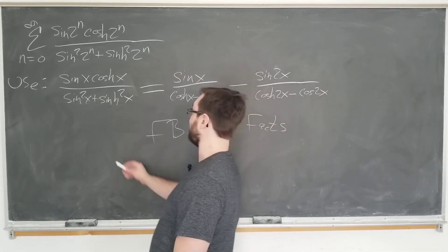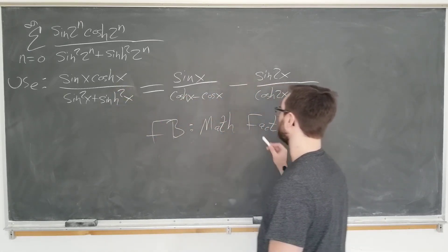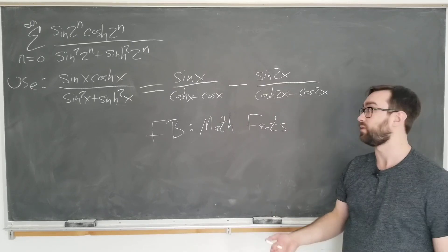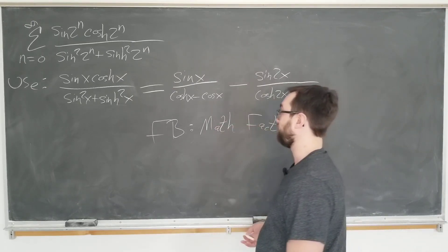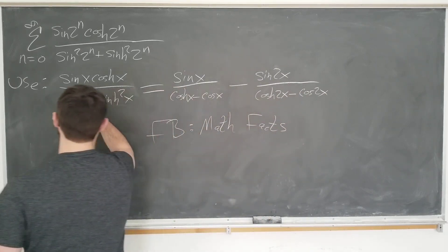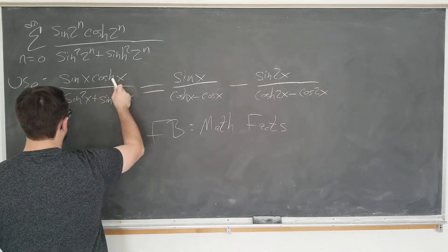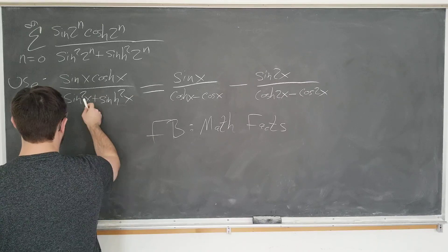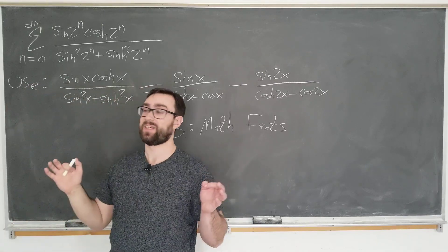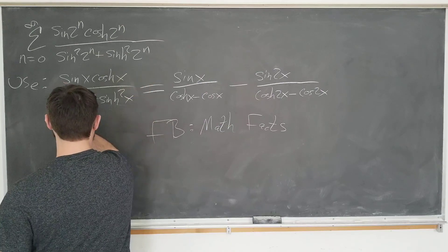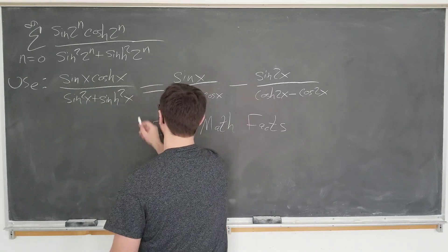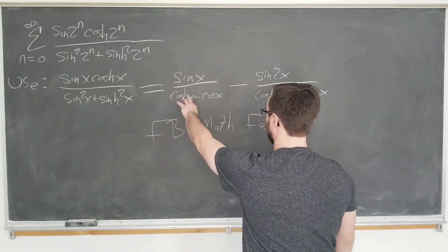We are also going to use this identity which I will derive for you shortly in the solution. This actually makes the solution quite simple and straightforward. Basically it says that sinh x cosh x over sine squared x plus sinh squared x is equal to sine x over cosh x minus cos x